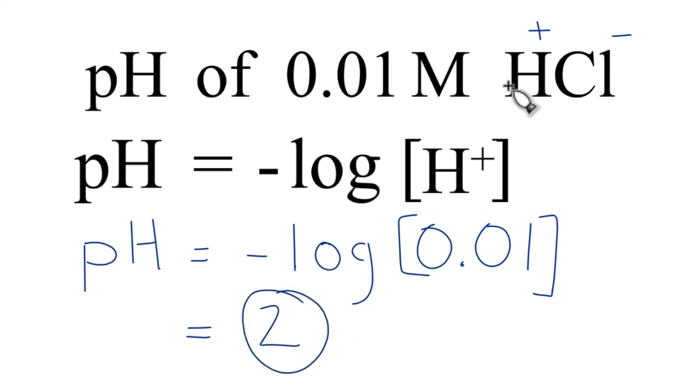And that makes sense. Hydrochloric acid is an acid, so we would expect it to be a pH lower than 7. So that's it. This is Dr. B, and thanks for watching.